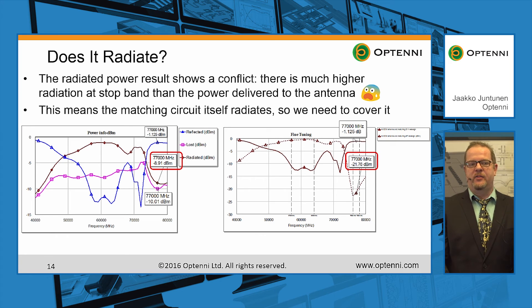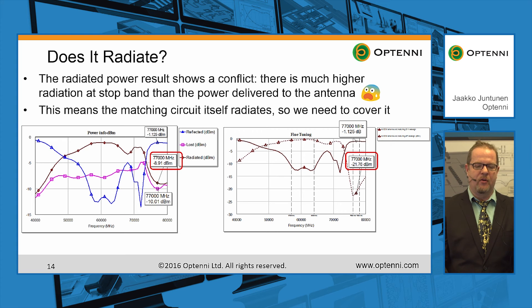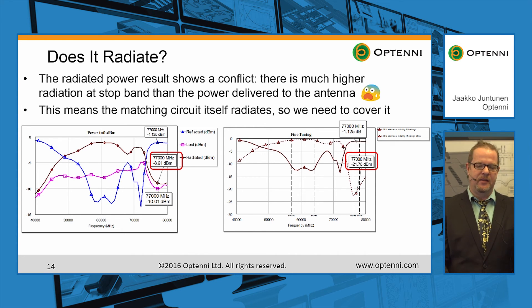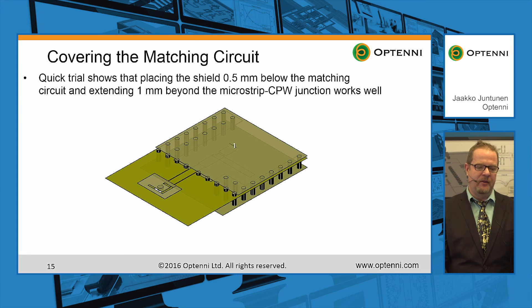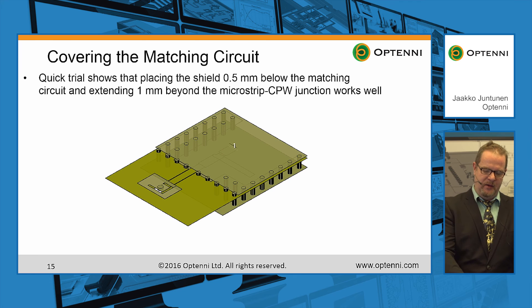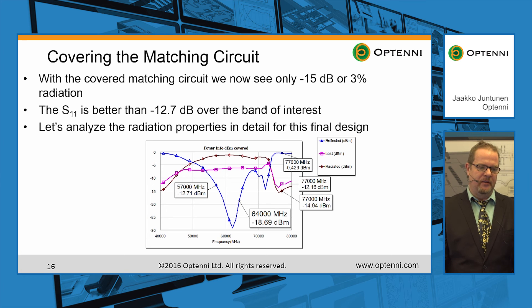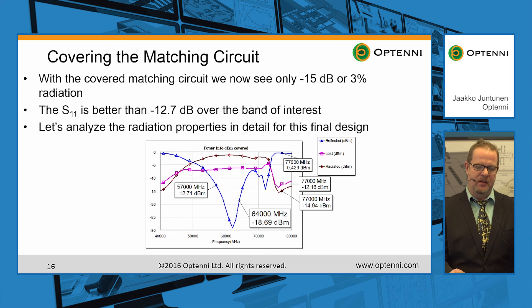When we analyze the radiation properties of the antenna, we see that there is actually a conflict: there is much higher radiation at the designed stop band than the power delivered to the antenna itself. This simply means the matching circuit itself is radiating at the stop band, so we just cover it. Using Axiom again and quick experimentation, we find that a certain kind of covering does not disturb the antenna performance much while it prevents the radiation at the stop band. With the covered matching circuit, we now see only about 3% radiation at the stop band, while S11 is better than almost 13 dB over the band of interest.